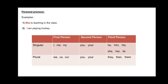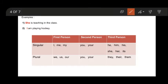Personal pronouns stand for three persons: first person, second person, and third person. First person: the pronouns used for the person speaking are called pronouns of first person. For example: I, me, my, we, us, our.